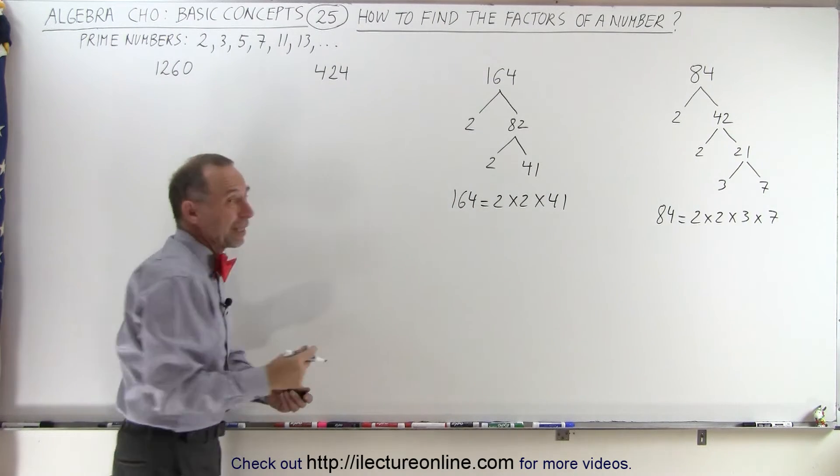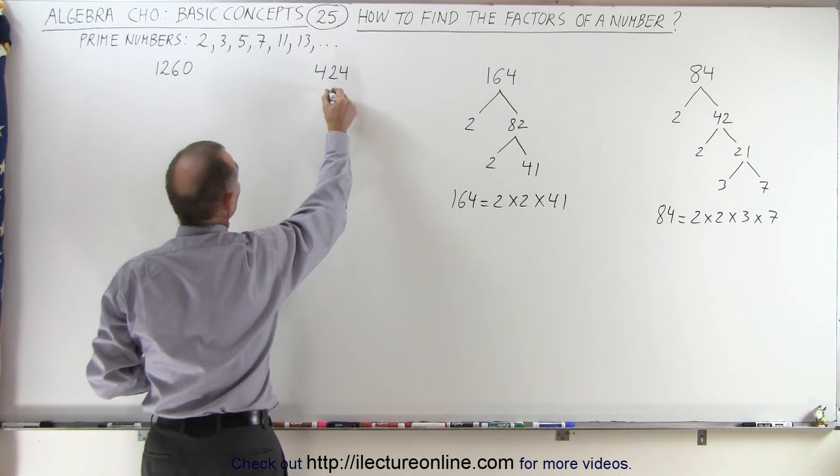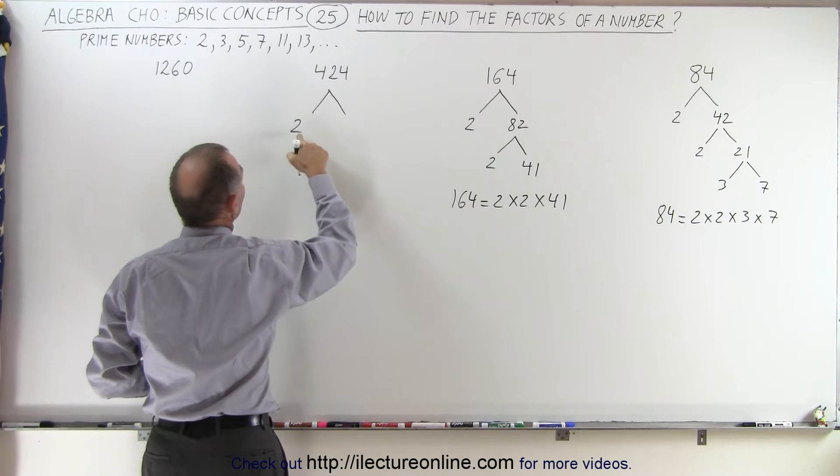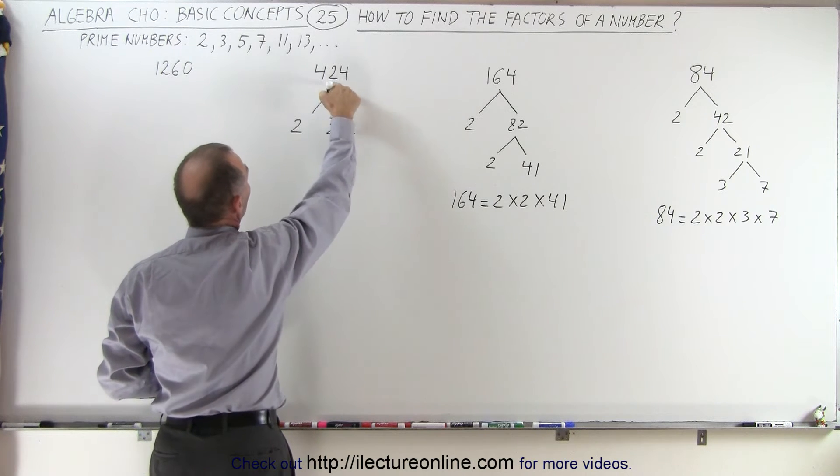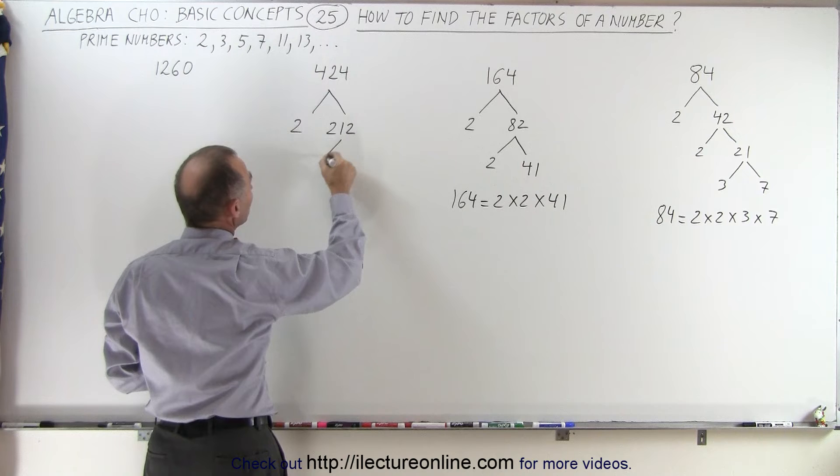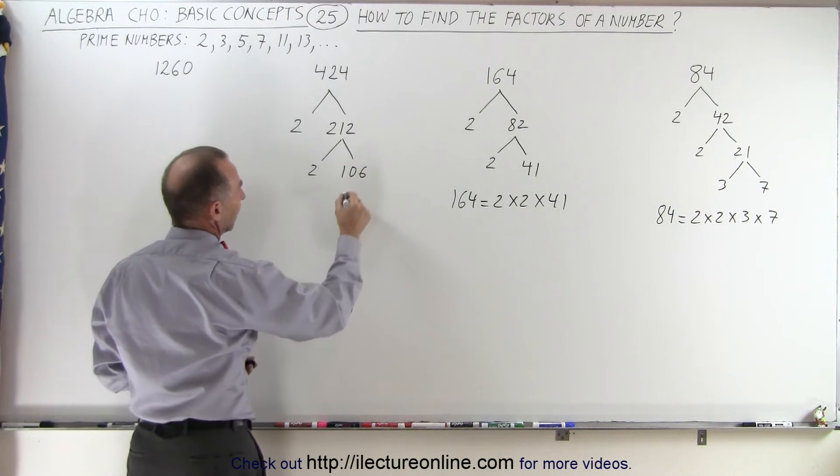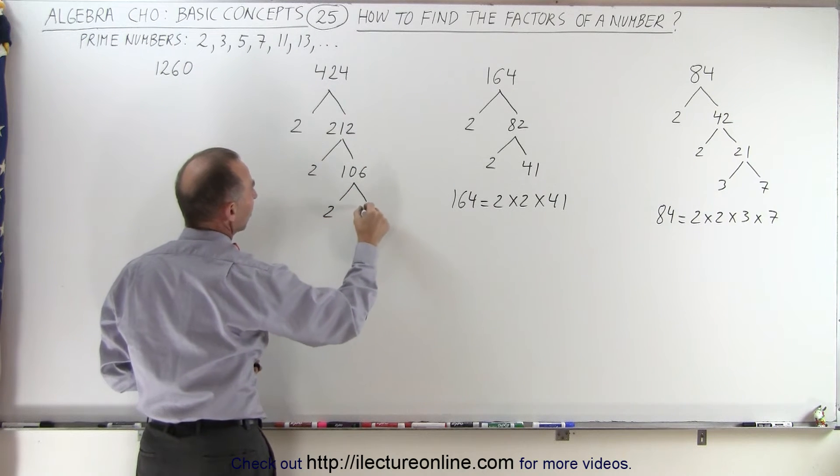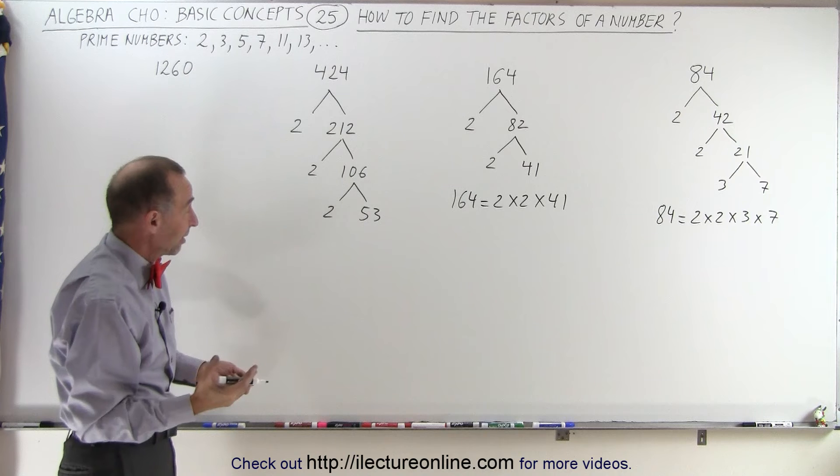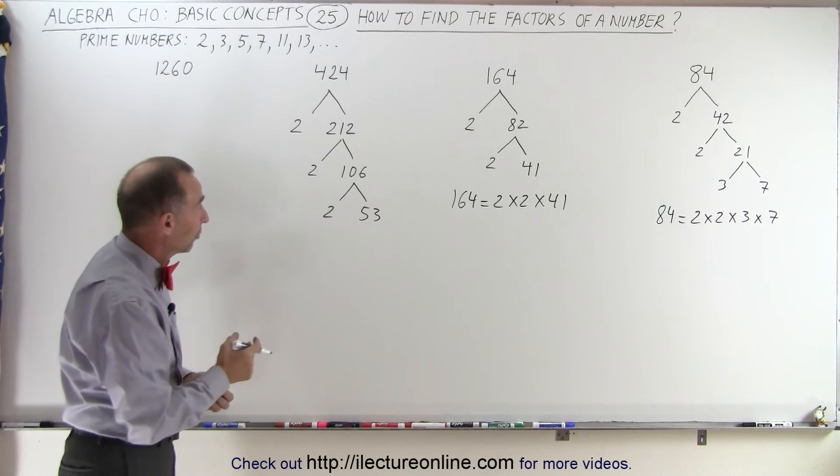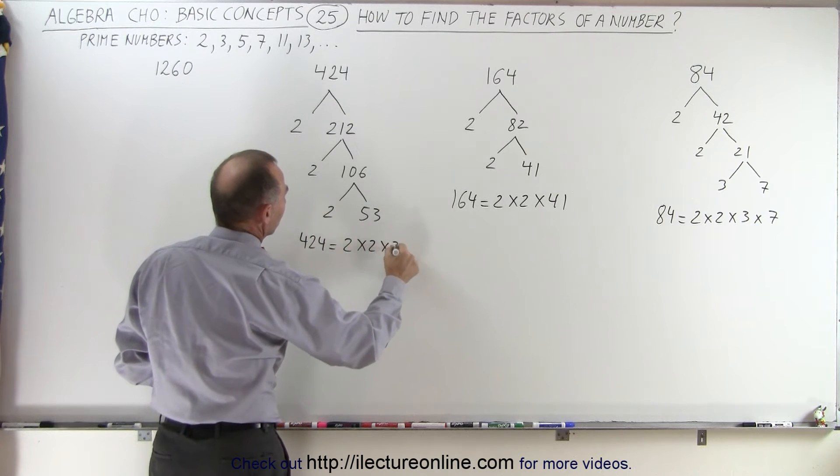And look at 424. It's a very big number, but you can start easily by simply using the smallest prime number. This can be written as a product of 2 times 212. It's still even, which means this can be divided by 2, and that gives us 106. It's still even, which means this could be written as 2 times 53. Now 53 cannot be divided by 2, by 3, by 5, by 7, or 11. It's a prime number, so we can write 424 as the product 2 × 2 × 2 × 53.